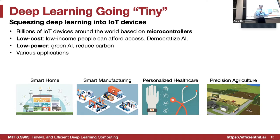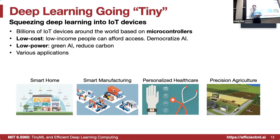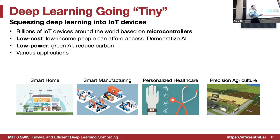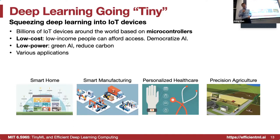Personalized healthcare is another application. Every person is different, and we want more accessible, easier predictions about what our body is doing by using something like a watch or other mobile, portable, small, and accurate sensors — tailored to each individual's conditions and medical history. Precision agriculture is another example: when to water crops, classifying different crops, and so on. There are lots of applications as well.